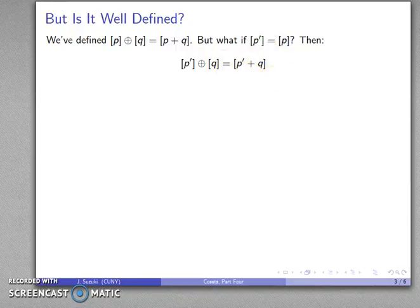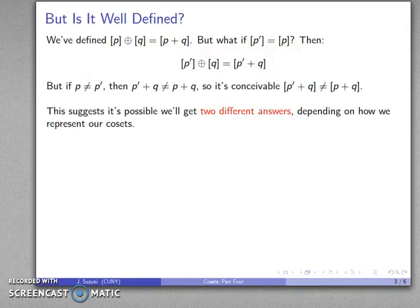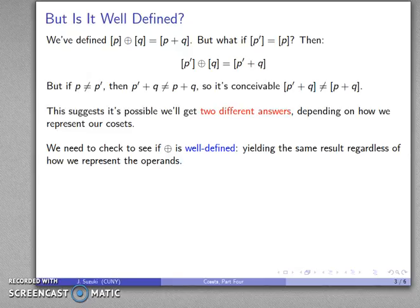I'm going to be adding the coset representatives. And the thing I have to worry about is because P and P' are different, then P plus Q is different from P' plus Q. So conceivably, this coset sum might be different from this coset sum. And so we want to make sure they're the same because I want to make sure that the sum does not depend on the individual representative. So we have to check to see if our coset sum is well defined.